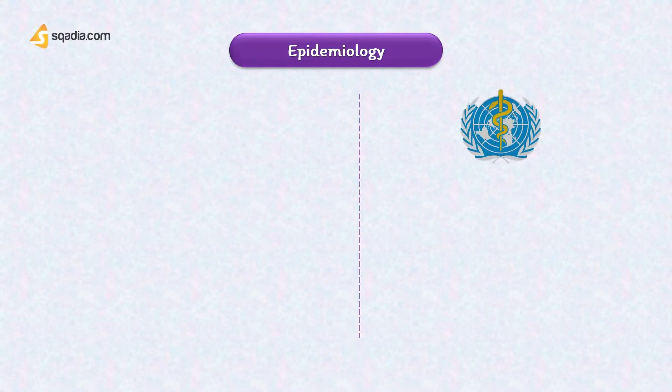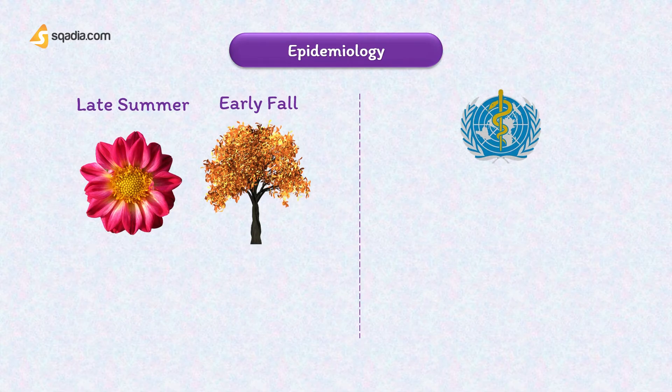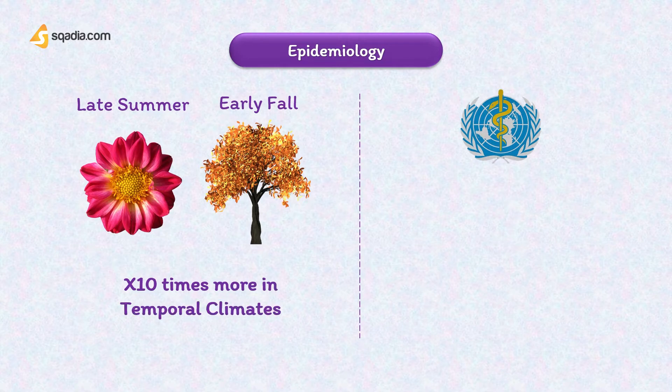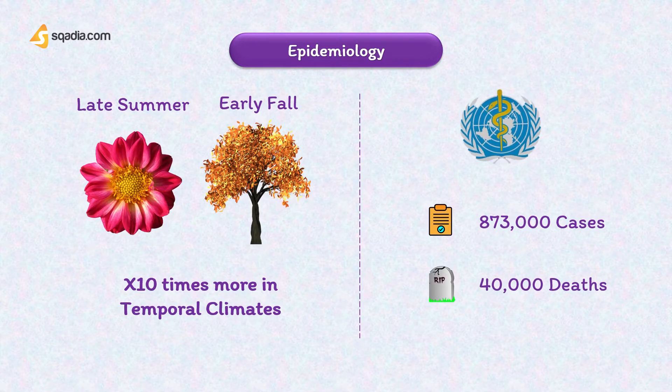Leptospirosis typically occurs in a temperate climate during the late summer or early fall in western countries and during the rainy season in the tropics. The incidence in the tropics is almost 10 times that of more temperate climates. It tends to be an unreported disease because its symptoms mimic many other disease processes. The World Health Organization has estimated 873,000 cases annually with over 40,000 deaths. Most notable outbreaks usually occur when people participate in a triathlon where the swimming portion takes place in fresh water.